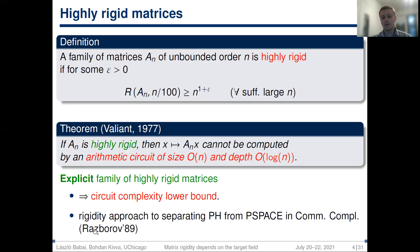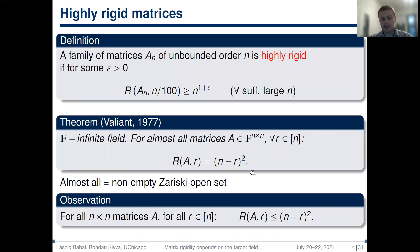This means that an explicit family of highly rigid matrices would show circuit complexity lower bounds. Moreover, Borodin showed in 1989 that this notion of rigidity can be used to separate the polynomial hierarchy from PSPACE in communication complexity. Again, one needs explicit families of rigid matrices. Note that explicitness is important here because, as Valiant showed, over any infinite field for almost all matrices, rigidity achieves its maximum possible value (n minus r) squared. Here "almost all" means this is satisfied for a non-empty Zariski open set of matrices, which is much more than required for highly rigid matrices.